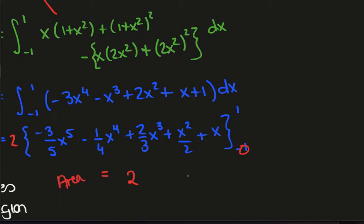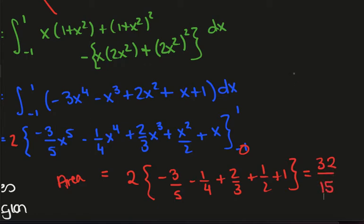So what I end up with the area being, or the volume, whatever you want to interpret it as, it will be 2 times minus 3 on 5 minus 1 on 4 plus 2 thirds plus 1 half plus 1. And you can check that this is 32 on 15.